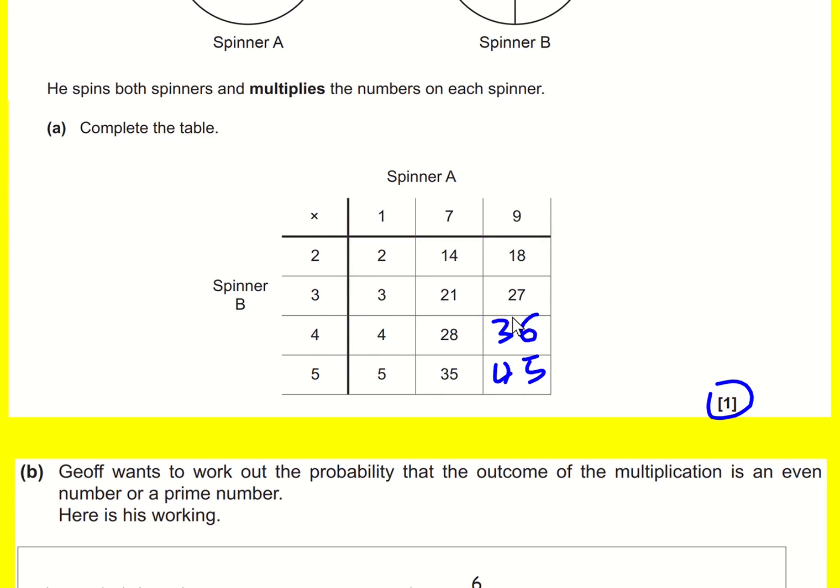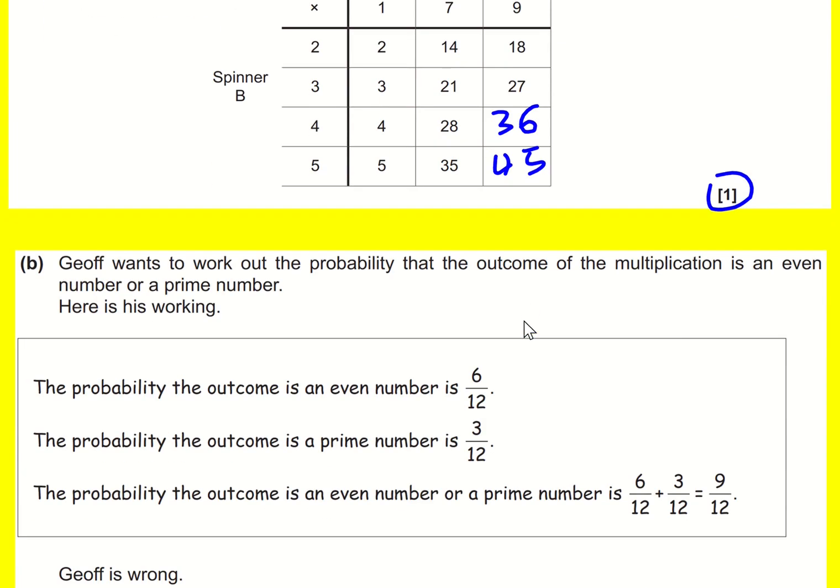And although this is correct because there are six even numbers here - 1, 2, 3, 4, 5, 6 - and this is correct because there are three prime numbers - 2, 5, and 3 - we've got to explain why he's wrong.